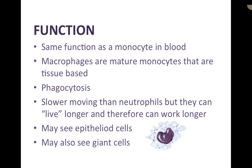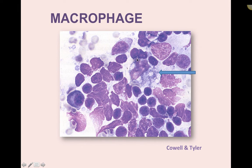Their function is the same as a monocyte in the bloodstream — they are mature monocytes that have moved into tissue. Their main role is to phagocytize foreign invaders or dead and dying cells. They're slower moving than neutrophils, so they're not the first line of defense, but they can live and work longer. You might also see epithelioid cells, which are giant macrophages specific to skin, and giant cells.